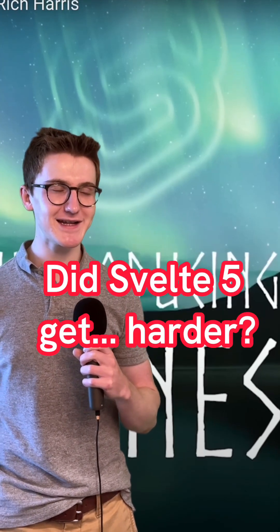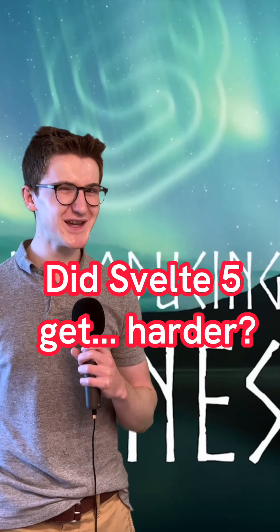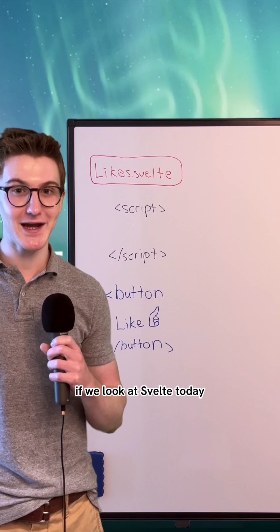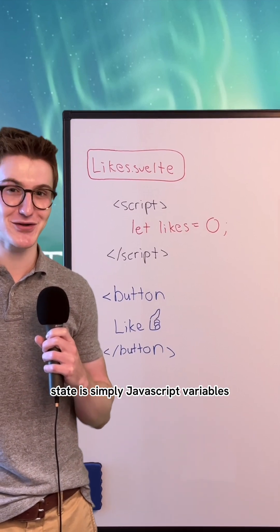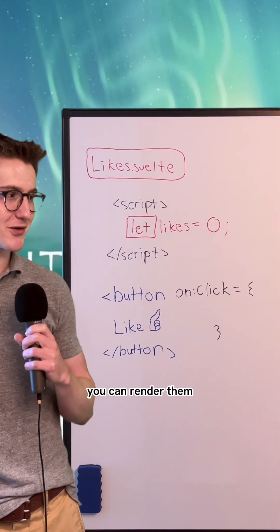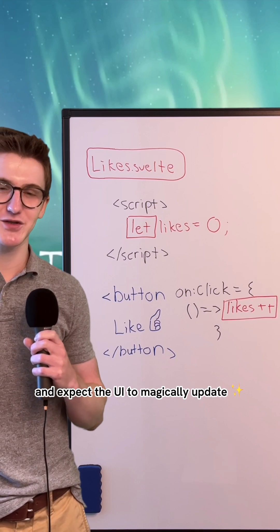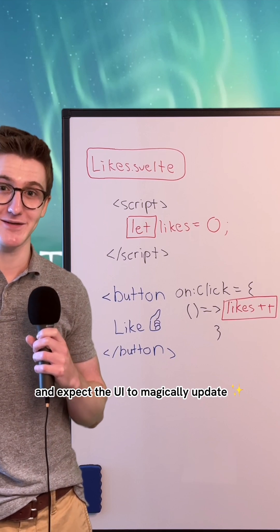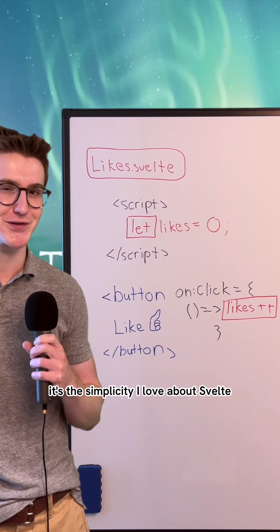Svelte 5 made state more complicated, but I think it's a good thing. If we look at Svelte today, state is simply JavaScript variables. You can render them, mutate them, and expect the UI to magically update. It's the simplicity I love about Svelte.